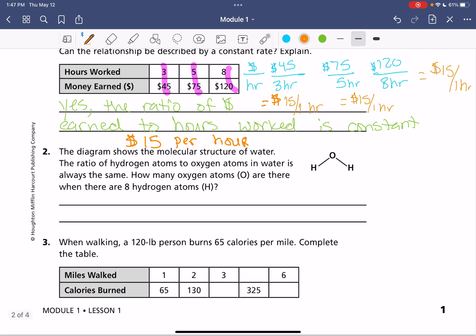All right, here we have a molecular structure of water. The ratio of hydrogen atoms to oxygen atoms in water is always the same. So here they tell us, when we read through our problem here, the ratio is always the same. So it is constant.